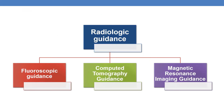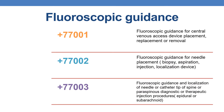Now coming to radiologic guidance. As discussed earlier, radiologic guidance is further subcategorized into three types: fluoroscopic guidance, computed tomography guidance, and magnetic resonance imaging guidance. Coming first to CPTs of fluoroscopic guidance — all the fluoroscopic guidance CPTs are add-on codes, indicated with a plus symbol. They should not be used alone but in conjunction with another primary procedure.